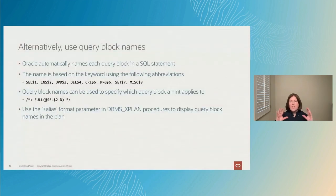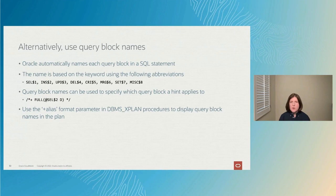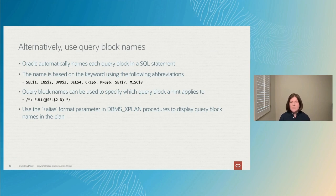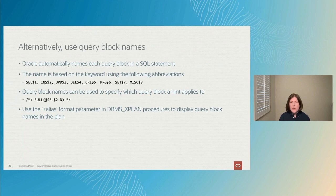If you want to specify all hints upfront in the outer query, you need to tell the optimizer which query block each hint belongs to. Oracle automatically names all query blocks in your SQL statements using a common naming convention — for example, a SELECT query block will be called SEL$1, SEL$2, and so on. By referencing those query block names, you can specify all hints in the outer query. You can see the query block names by passing the 'plus alias' format parameter to your DBMS_XPLAN procedure call.